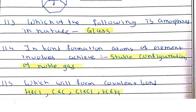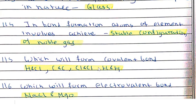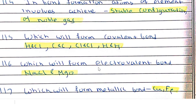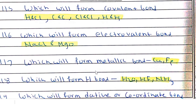All of the following form covalent bonds: hydrogen and chlorine, carbon and carbon, chlorine and chlorine, and hydrogen and hydrogen. NaCl and MgO form electrovalent bonds.